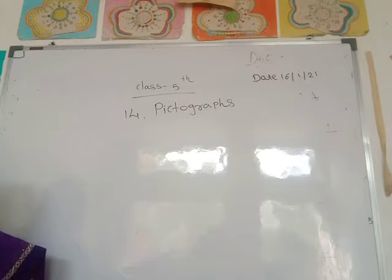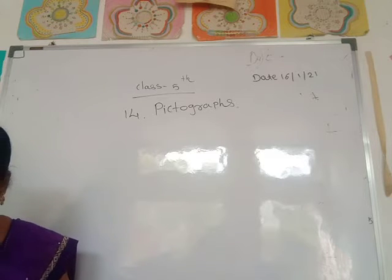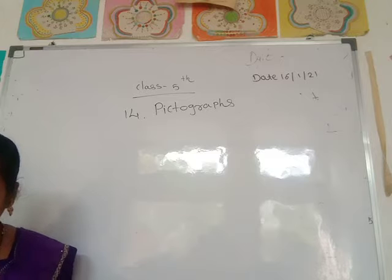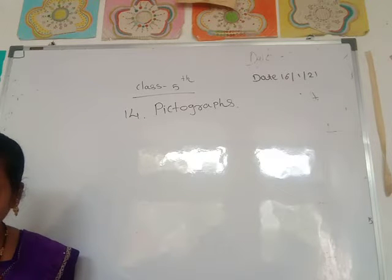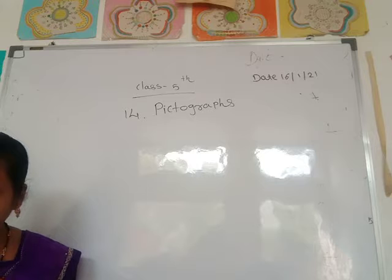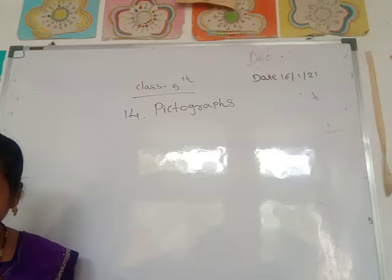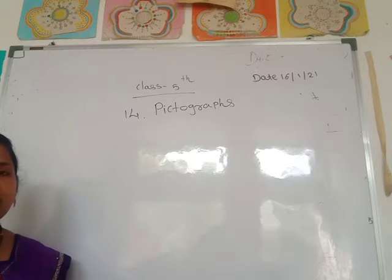A pictograph represents pictures as numbers. When the number of objects is very big, it is not possible to draw one picture per object. So we use a scale, like one picture equals 5 objects. For example, 25 objects means we draw only 5 pictures.